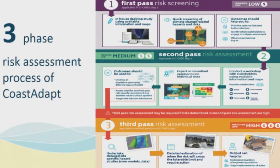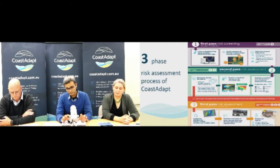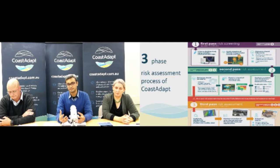Let me first start by showing you how we laid out the risk assessment process in Coast ADAPT. We have three levels of risk assessment: first pass risk screening, second pass risk assessment and third pass risk assessment. Mainly because organizations often have limited resources, we created a low cost fast pass risk screening that uses existing national and state level information and can provide users high level information about their future climate change risk. It can help them to identify assets and geographical areas that might be at risk in future and, more importantly, it can help identify stakeholders that they need to engage with down the track in the second pass risk assessment.